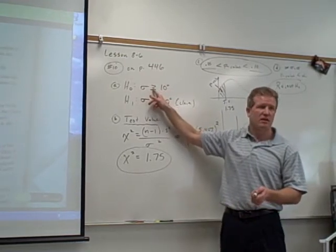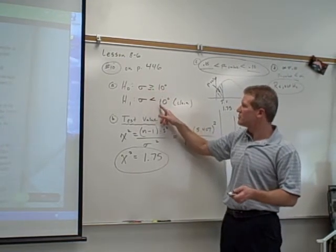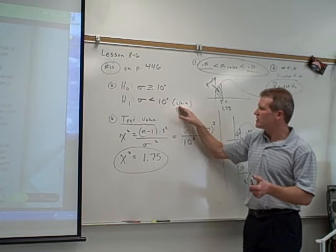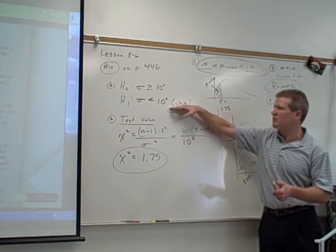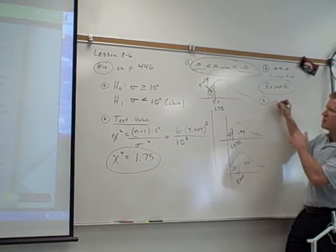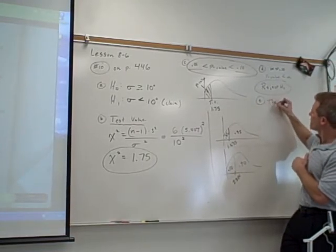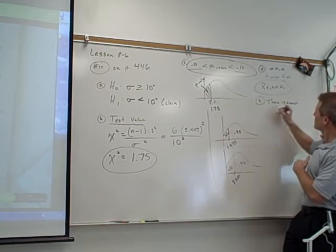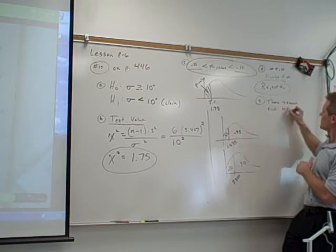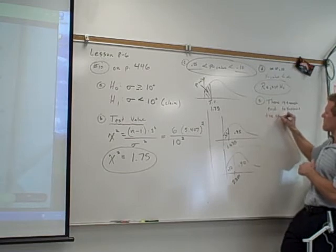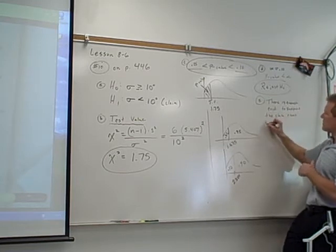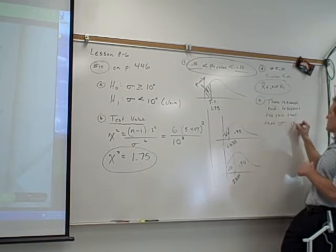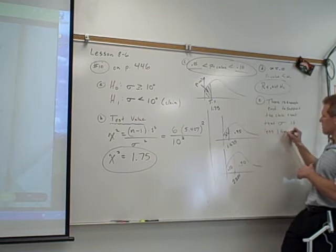Then if I'm rejecting the null, that means I'm thinking the null is not true. I'm rejecting it. That means I'm thinking the claim is true. So we're not proving anything, but that's what I'm thinking. So I'm going to say there is enough evidence to support the claim. When the claim's in the alternative, use the word support. There is enough evidence to support the claim that the population standard deviation is less than 10 degrees.